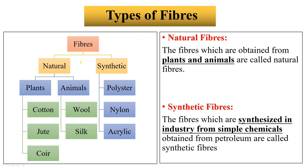Now we will study about types of fibers. There are two types of fibers: natural and synthetic. Natural fibers are obtained from plants and animals. Plant fibers include cotton, jute, and coir — coir is obtained from coconut. Animal fibers include wool and silk. Synthetic fibers are synthesized in laboratories with the help of simple chemicals. Examples of synthetic fibers are polyester, nylon, acrylic, rayon, etc.